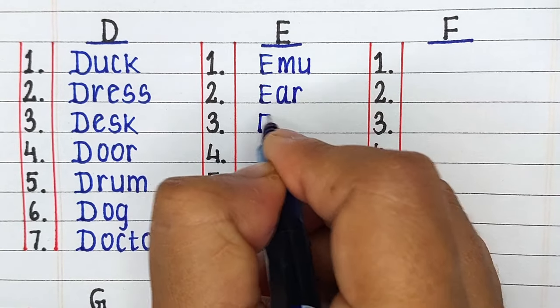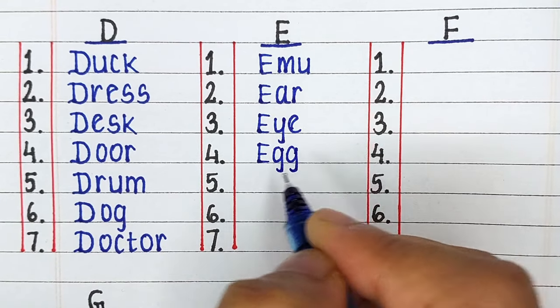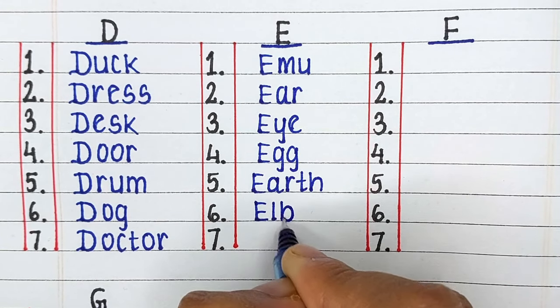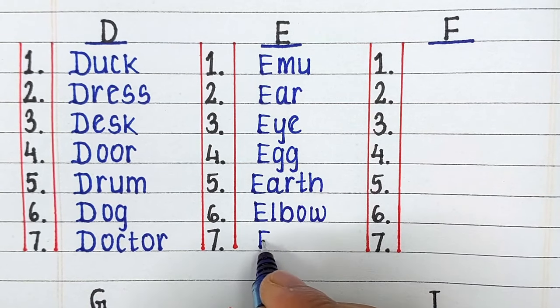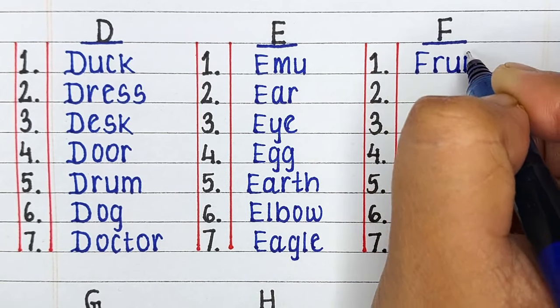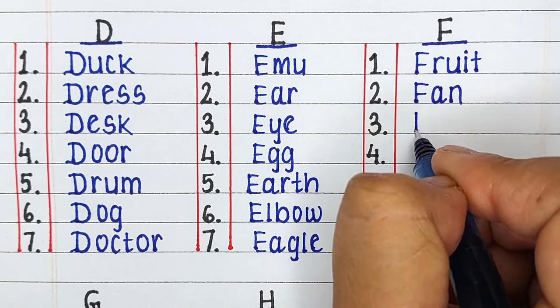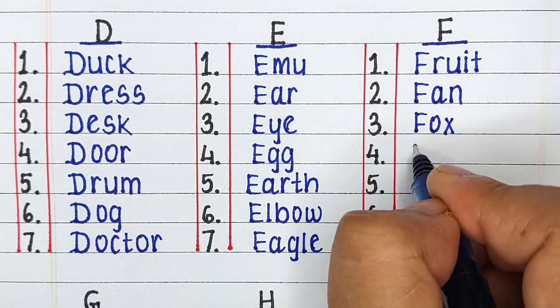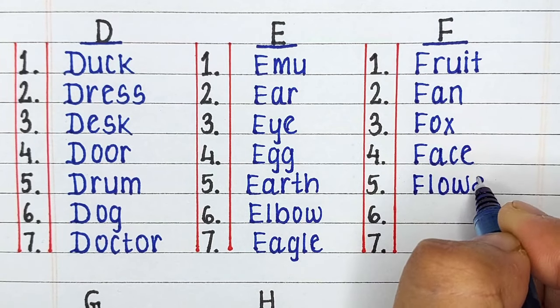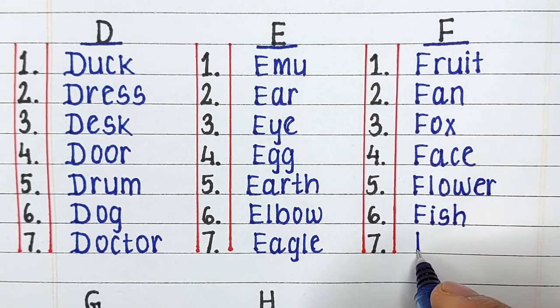Next is Alphabet E. The words are Ear, Eye, Ear, Egg, Earth, Elbow and Eagle. Next is Alphabet F. The words are Fruit, Fan, Fox, Face, Flower, Fish and Frog.